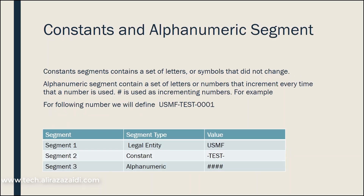The constant segment contains a set of literals or symbols that do not change. For example, there may be a requirement where we define 'purchase' or 'sale' in a sequence number. As a constant, we could use a value like 'test' as an example.